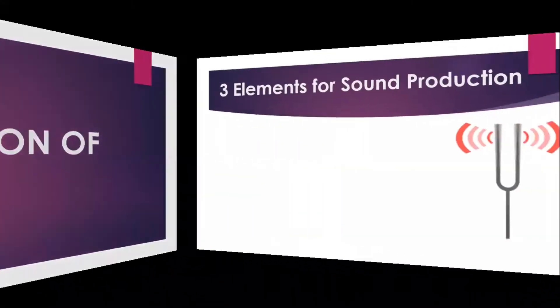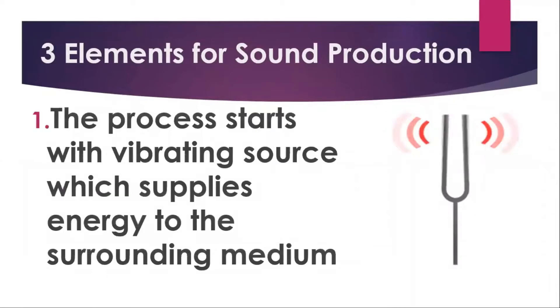Beginning with the three elements for sound production, the process should always start with a vibrating source which supplies the energy to the surrounding medium. In this animation, let's have the tuning fork as the source of the vibration producing the sound.